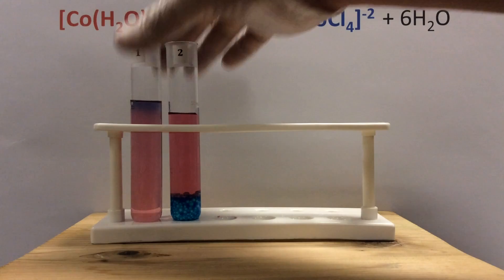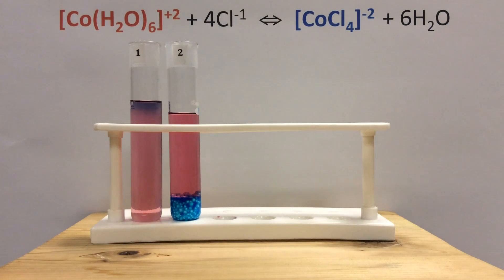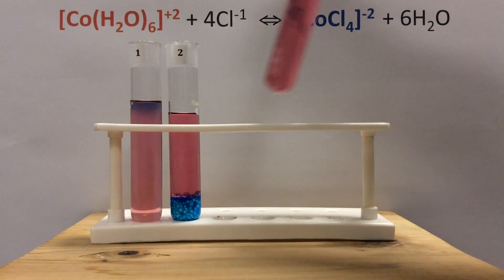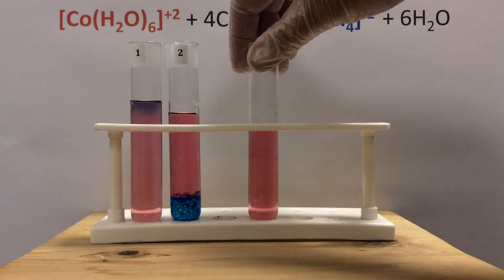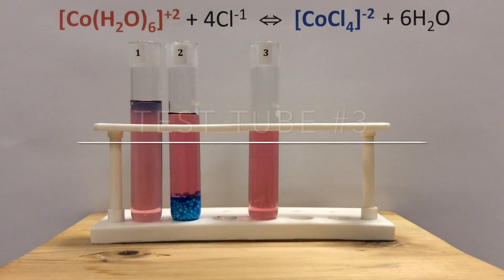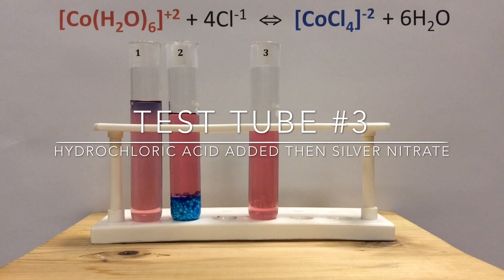You should be able to figure out where the reaction is shifting to by whether we're making a pink or blue complex here. Again, these colors are due to crystal field theory where we're drawing in the ligands into the d orbitals and causing the d orbitals to split—pretty cool stuff to go through.